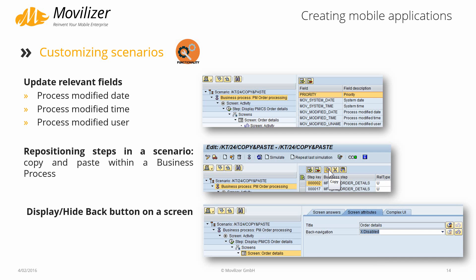In Scenario, there is the new update relevant fields feature. This means that you can define a set of fields for your business process that are relevant for an update on the mobile device. Setting or defining such a set will prevent the connector from generating new movlets in case unimportant fields that are not relevant for the mobile scenario changed due to an event in the system.